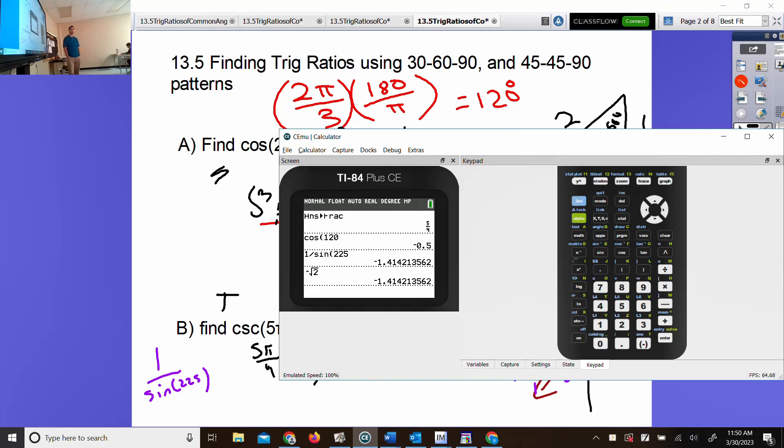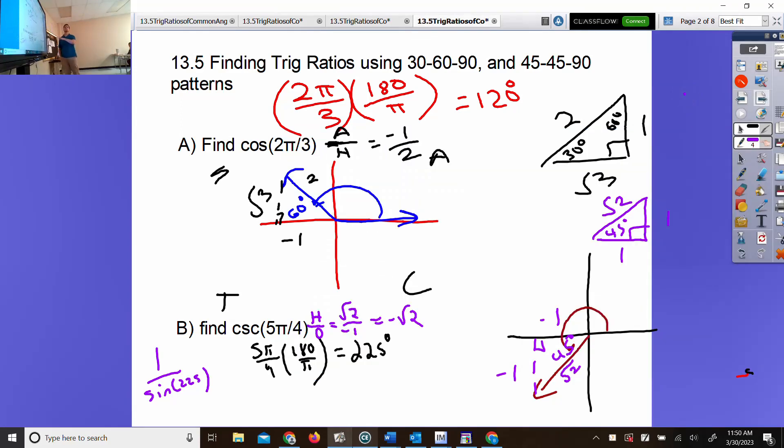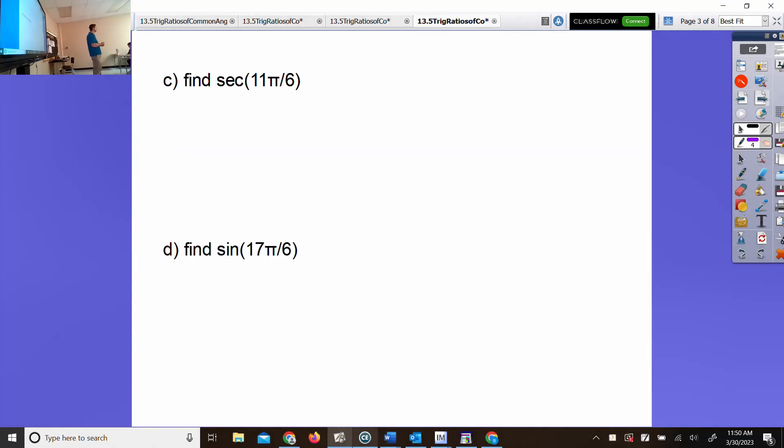Which one do you want to do? C or D? D is fine. We can do 17π/6. Make it a degree. Multiply by 180 over π.